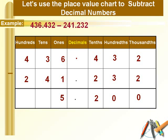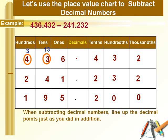Now let's move to the tens column. Since 4 is more than 3, we can't subtract 4 from 3, so let's make this 3 into 13 by borrowing 1 from the 4. So 3 changes to 13, and 13 take away 4 gives 9. Now the 4 at the hundreds place changes to 3. Subtract 3 and 2: 3 take away 2 gives 1. So our answer is 195.200, which is simply 195.2.